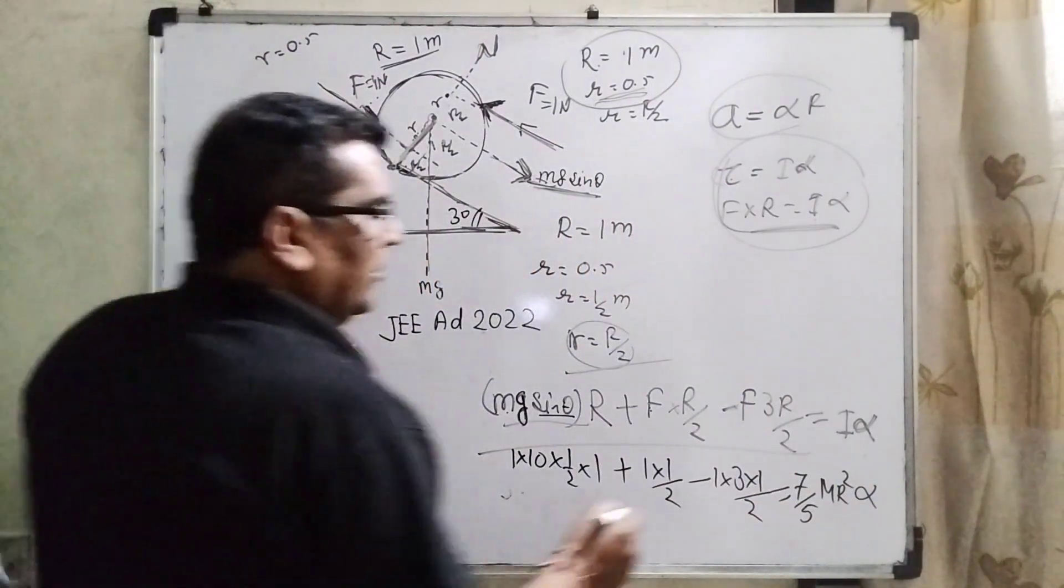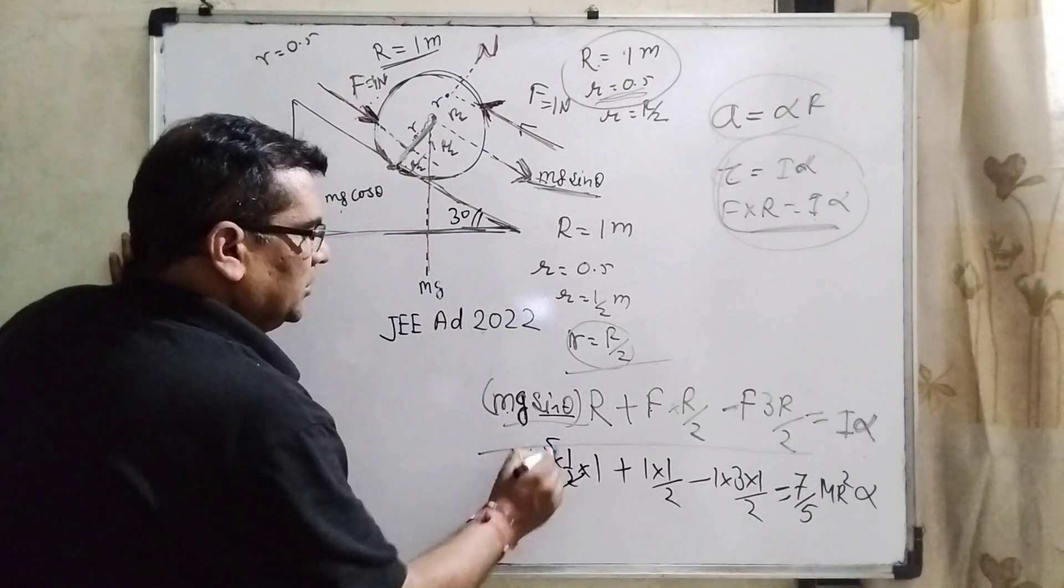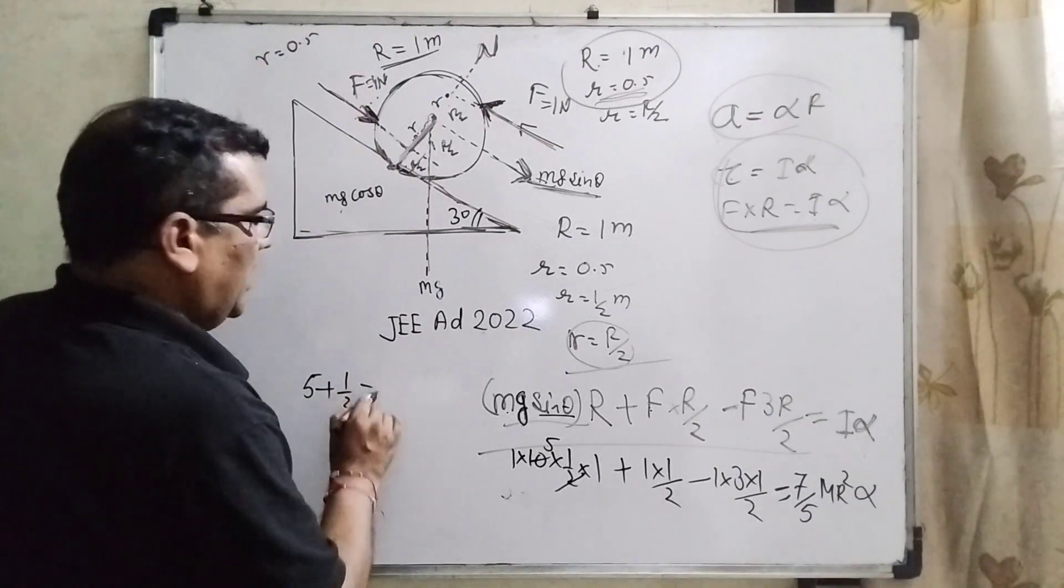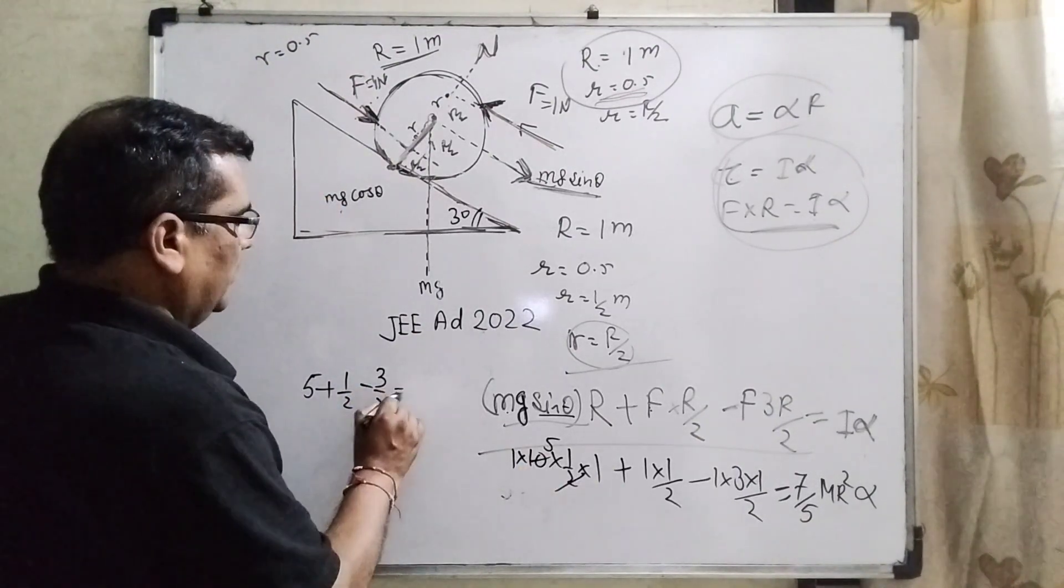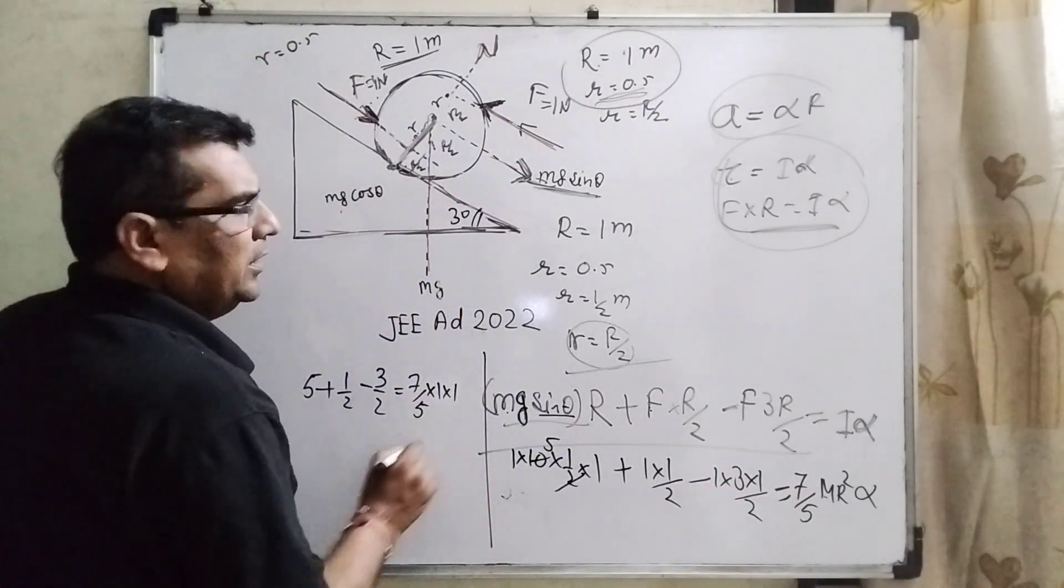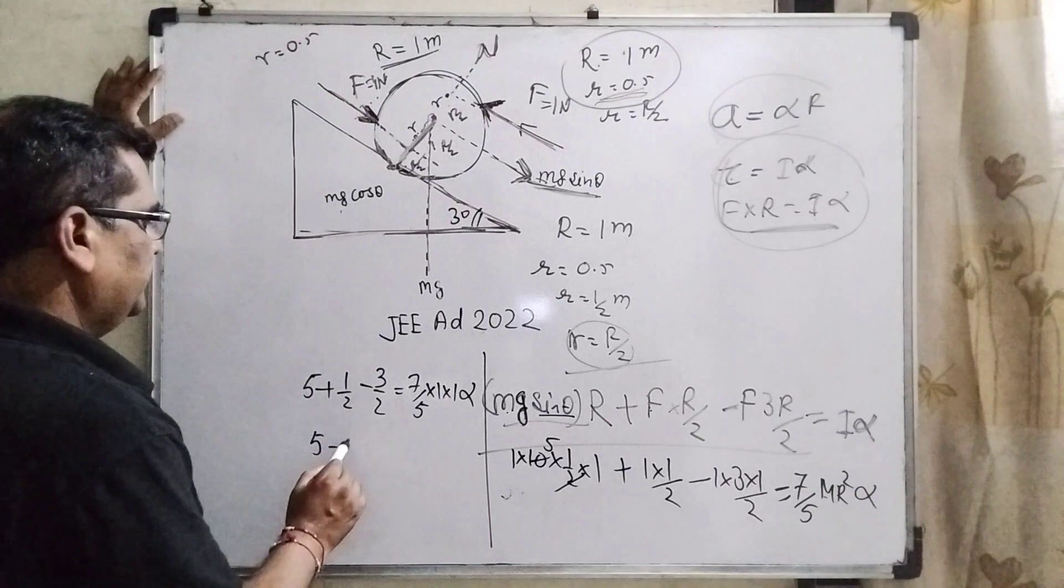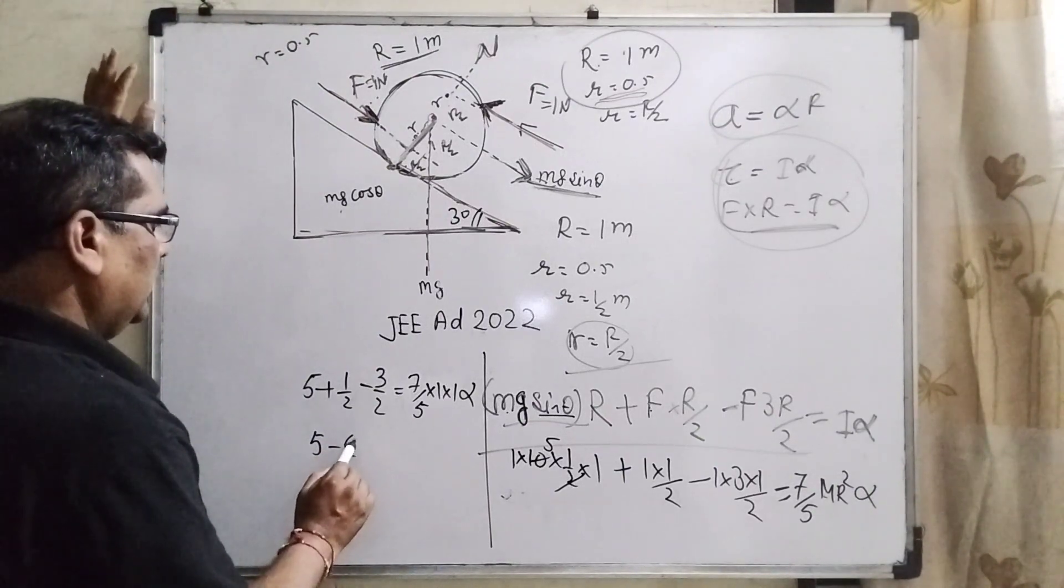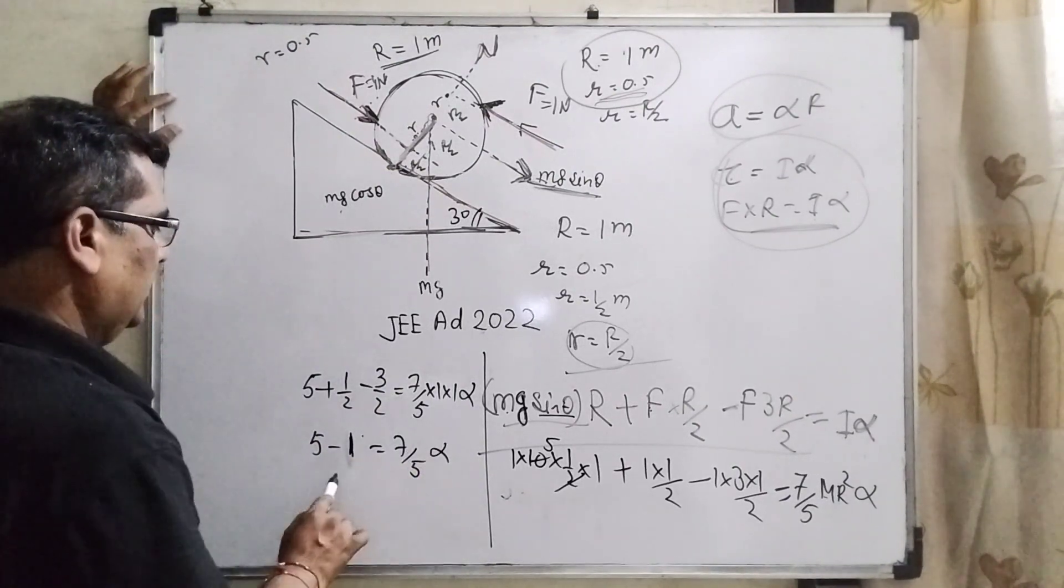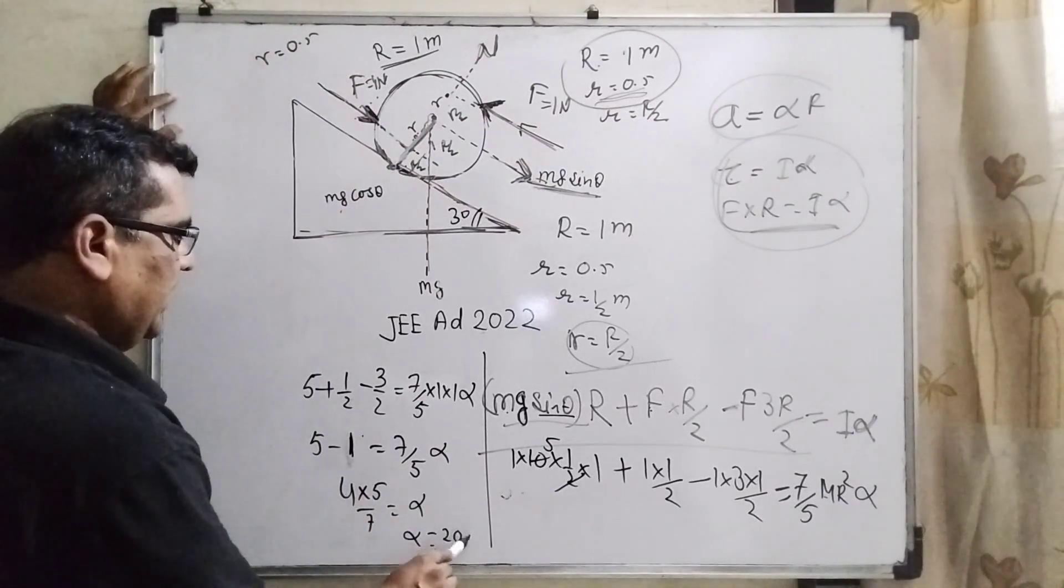So here we have to put I as 7 by 5 mr square alpha. Then solve: 5 plus 1 by 2 minus 3 by 2 equal to 7 by 5, and mass is 1, radius is 1, and alpha. Then 5 and how much? Taking the 2. Solve—this value is 4 and 7 by 5 alpha. 4 into 5 by 7 equal to alpha, then alpha equal to 20 by 7.